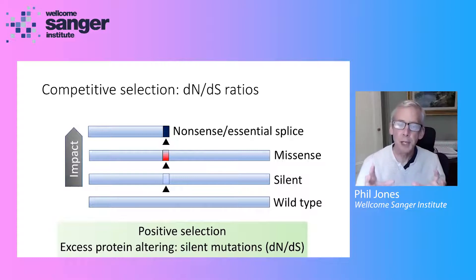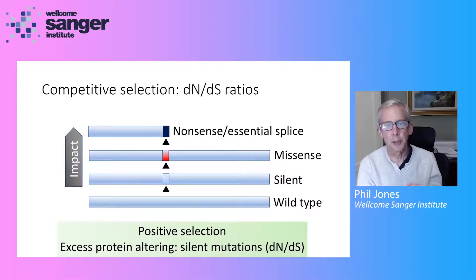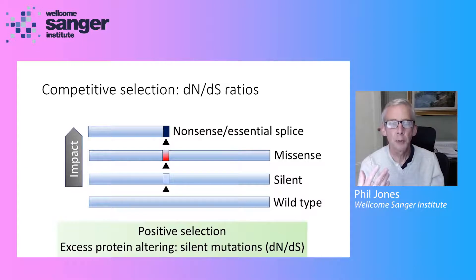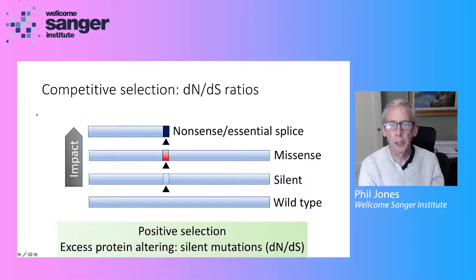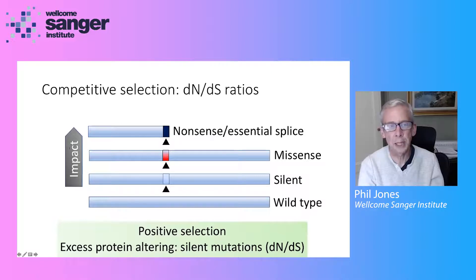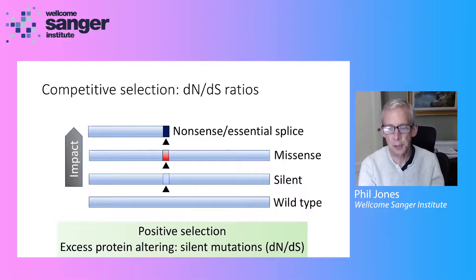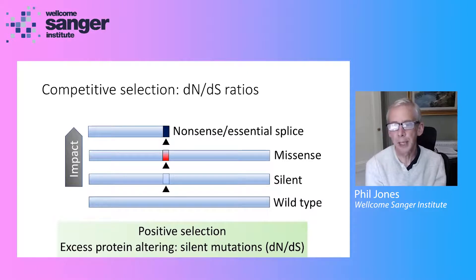So there are lots of mutations, but do they matter? Do these mutations actually alter cell behaviour to drive clonal expansions? A widely used technique in molecular evolution is to look at the ratio of mutations that alter protein structure compared with those that are silent — the dNdS ratio. A silent mutation almost always does nothing to protein function, but missense, nonsense, or other protein-truncating mutations have a major impact. Positive selection is when you have an excess of protein-altering mutations over silent ones, giving a dNdS ratio greater than one.